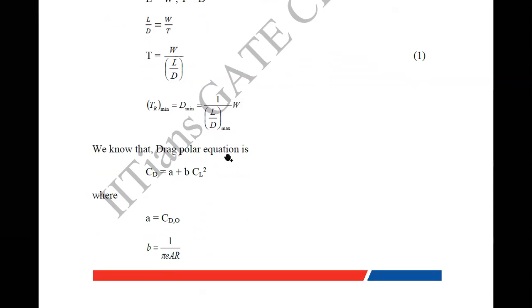We know the drag polar equation is given as C_D = a + b·C_L², where C_D is the drag coefficient, a is the parasite drag coefficient C_D0 which depends on the profile of your aircraft and wing-tip vortices, and b is 1/(π·e·AR), where e is the Oswald lift efficiency factor and AR is the aspect ratio.